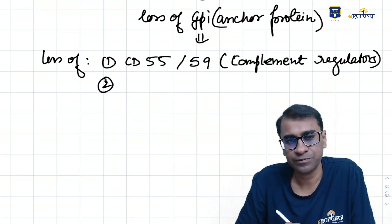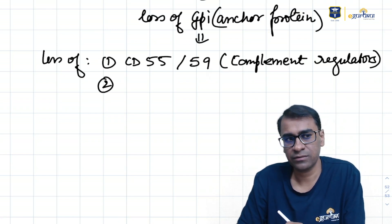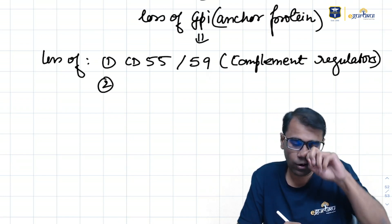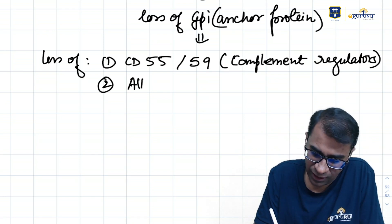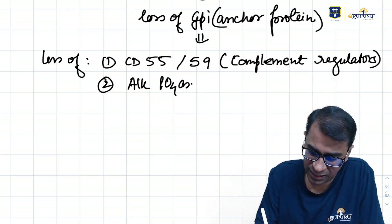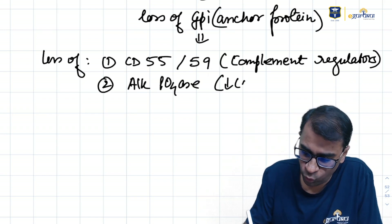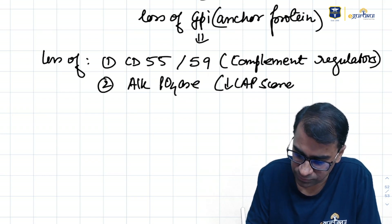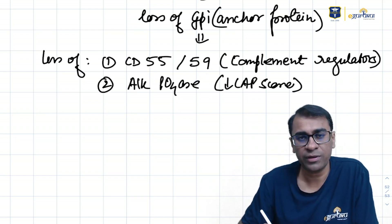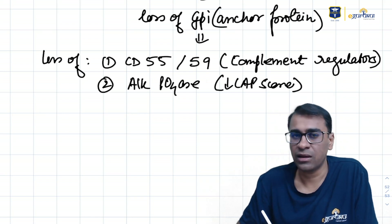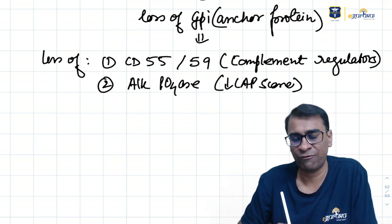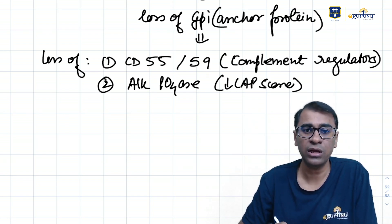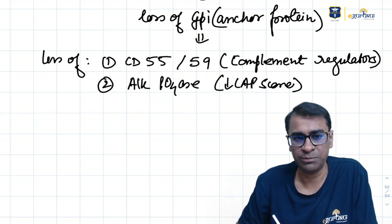Second, there also occurs a loss of the alkaline phosphatase enzyme, which proves the low LAP score in the patients. Do you remember the low LAP score causes? CML in chronic phase and PNH. This happens because alkaline phosphatase is also a GPI-linked protein.